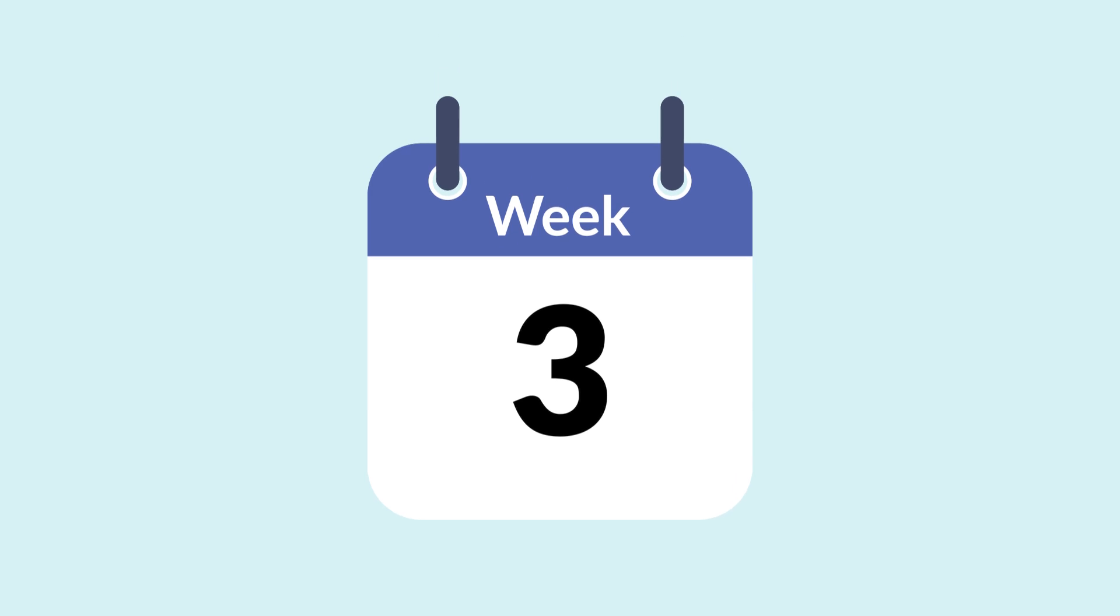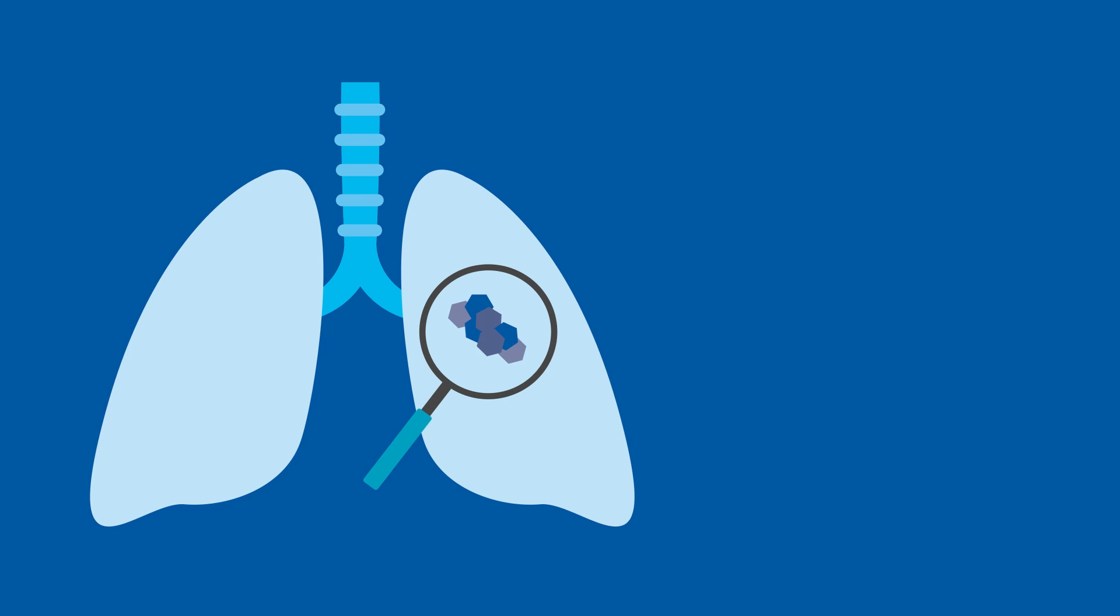Pembro is usually given every three or six weeks for up to two years. Our research suggests that standard treatment is too frequent and after six months Pembro can be given less often without reducing how well it works.